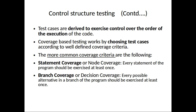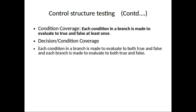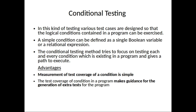Branch coverage, or decision coverage, requires every possible alternative in a branch to be exercised at least once. Condition coverage requires each condition in a branch to evaluate to both true and false at least once. Decision-or-condition coverage requires each condition and each branch to both evaluate to true and false.